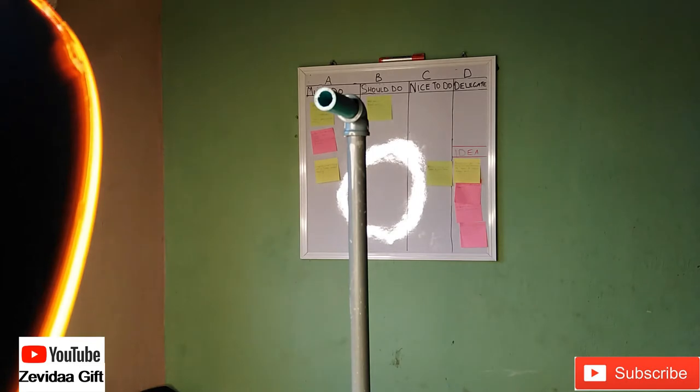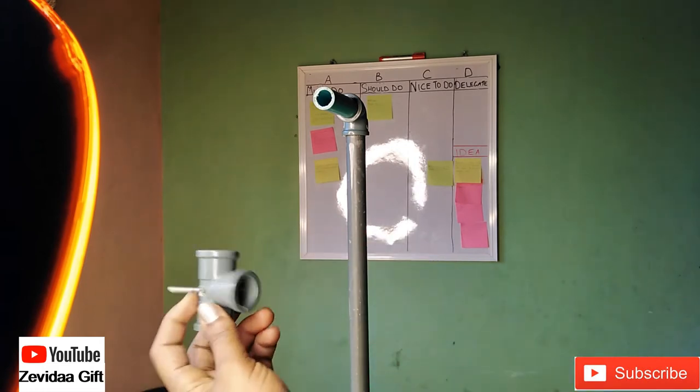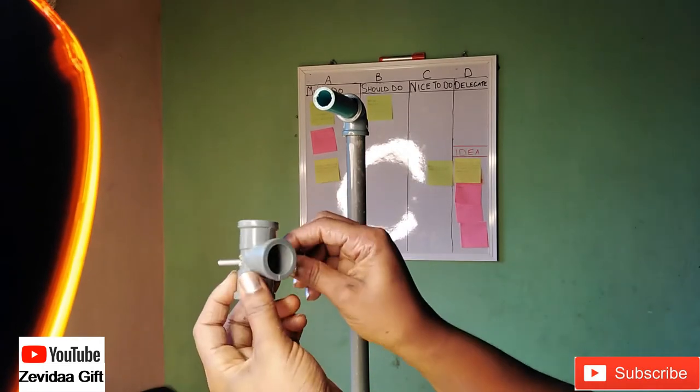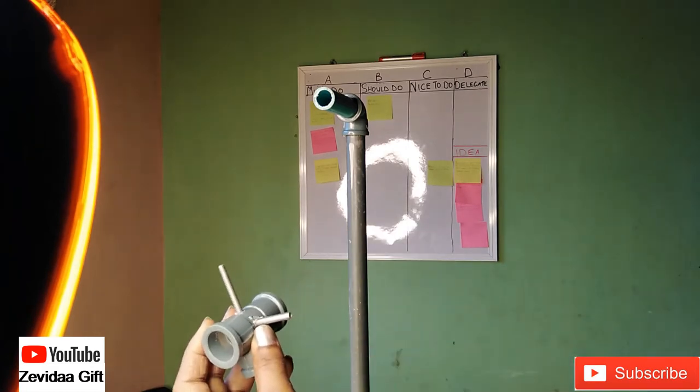So now for the next one, for those who don't have access to a selfie stick, I just removed the T. Now I picked the second screw and I'm just going to insert it into that opening that we made, remember?